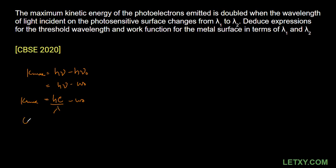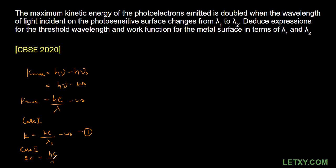There are basically two cases. In case number one, the kinetic energy is K and the equation is hc/λ₁ − W₀ = K. This is the first equation. In case number two, the kinetic energy becomes twice K when the incident wavelength changes from λ₁ to λ₂, so: hc/λ₂ − W₀ = 2K. This is the second equation.